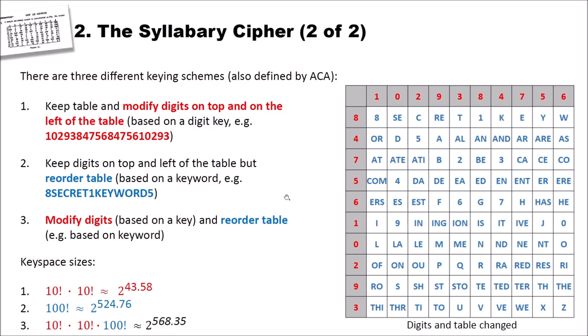Now let's have a look at key space sizes. The first keying scheme reorders the digits on the left and on the top. For the left, we have 10 factorial possibilities to assign digits into these cells here. So we have 10 factorial. On the top we have the same. So our key space size for keying scheme 1 is 10 factorial times 10 factorial, and this is about 2 to the power of 43.58.